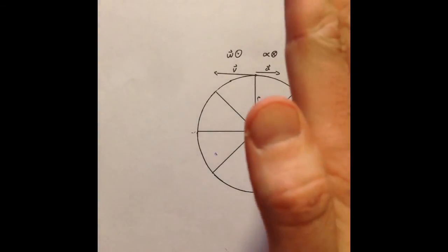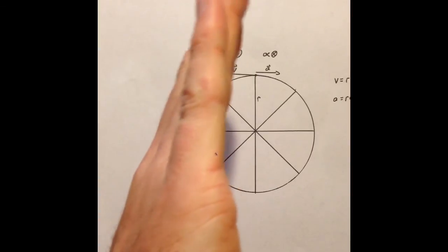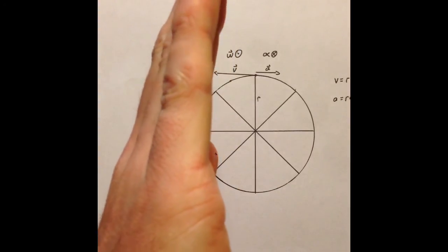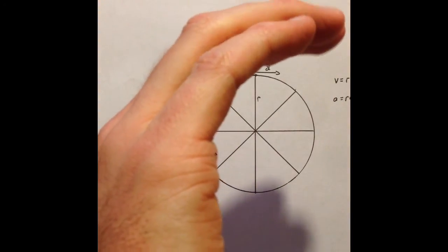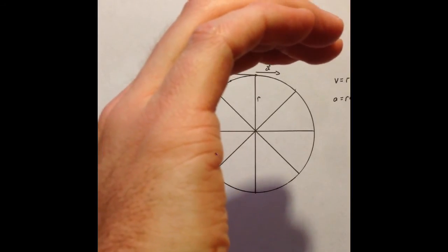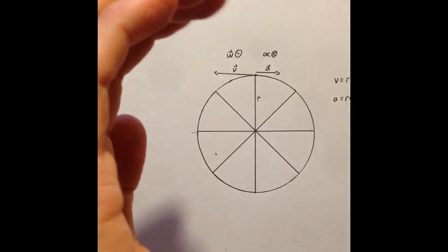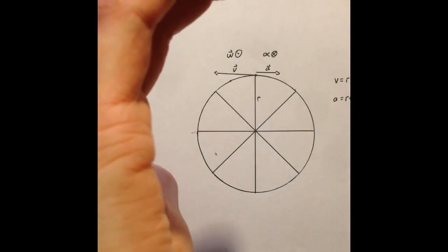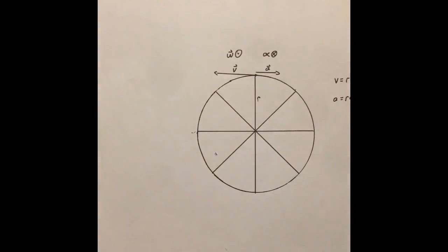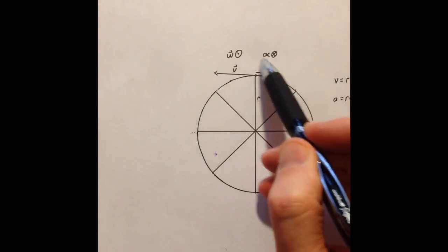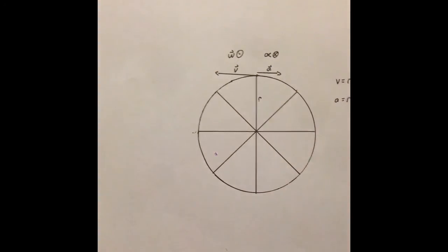But angular acceleration will require that now I flip my hand over. Notice now I align my fingers with the radius, but to curl my fingers in the direction of the acceleration, trying to slow the wheel down. And then whenever I put up my thumb, my thumb now is pointing into the page. So my angular acceleration will point down into the page.